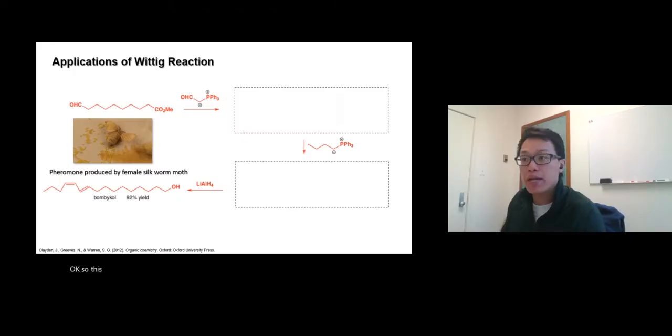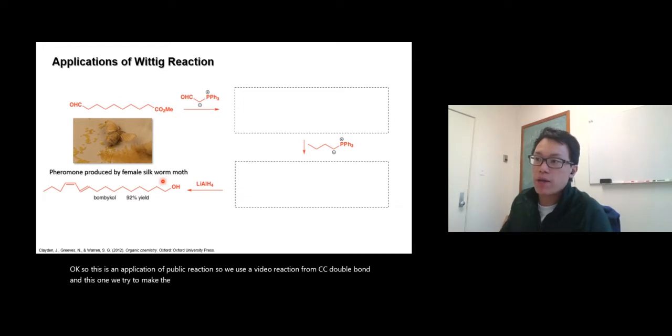Okay, so this is an application of a Wittig reaction. We use a Wittig reaction from a C-C double bond, and in this one we try to make the pheromone of the female silkworm moth.